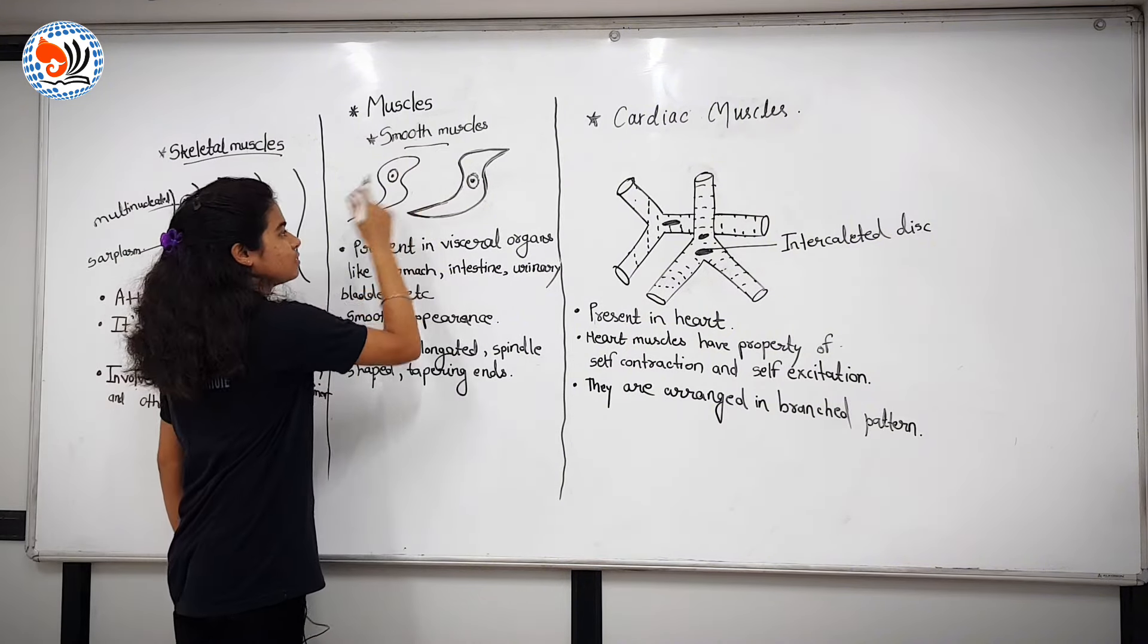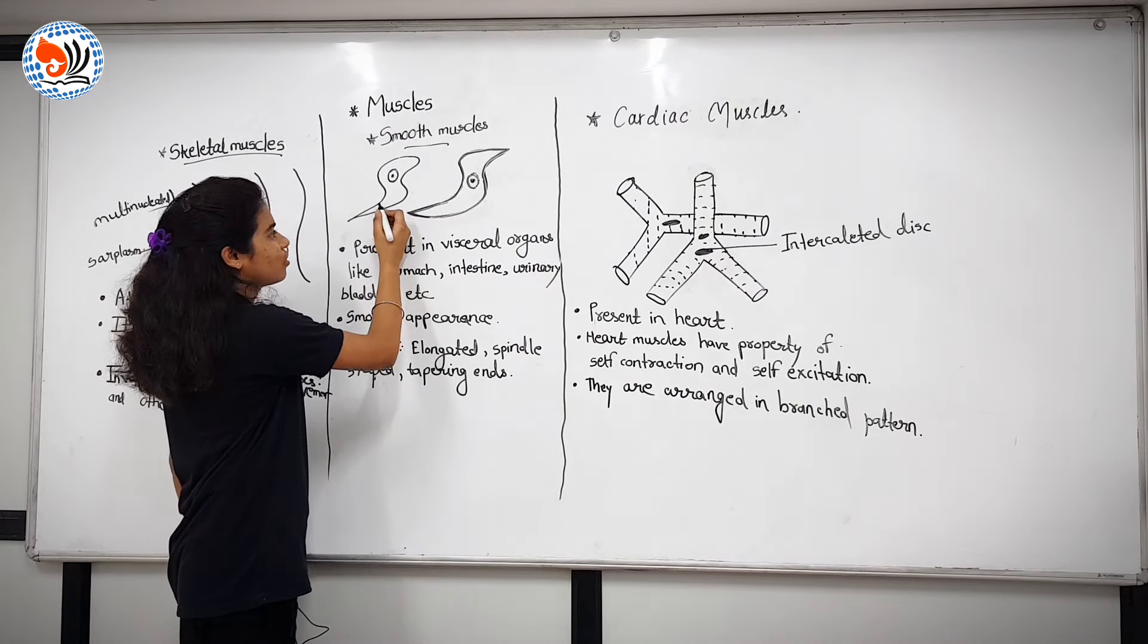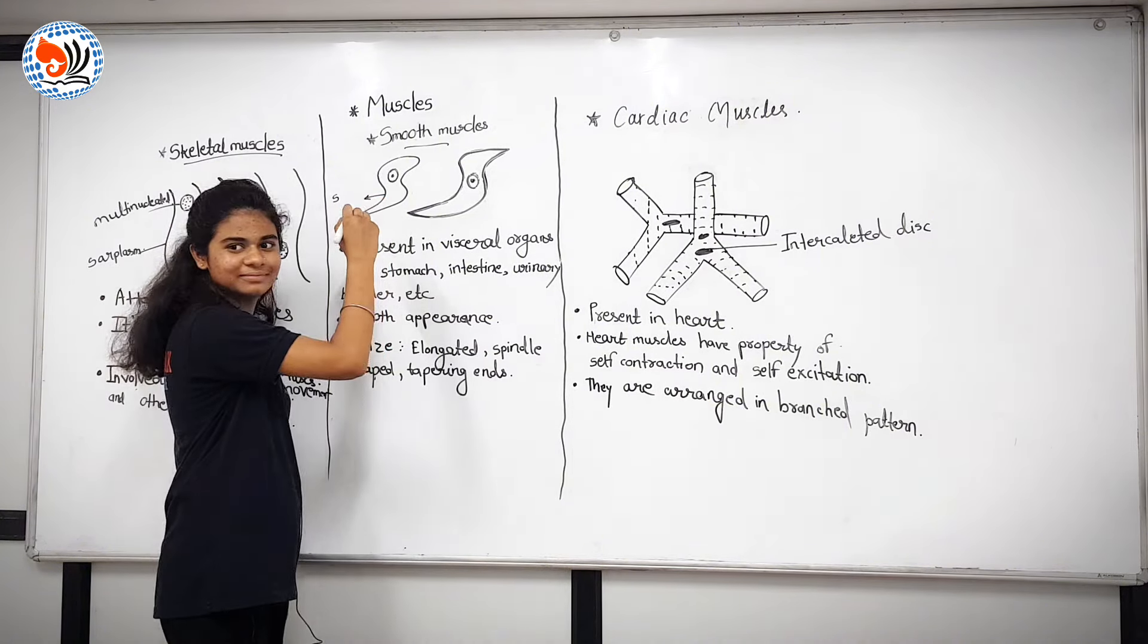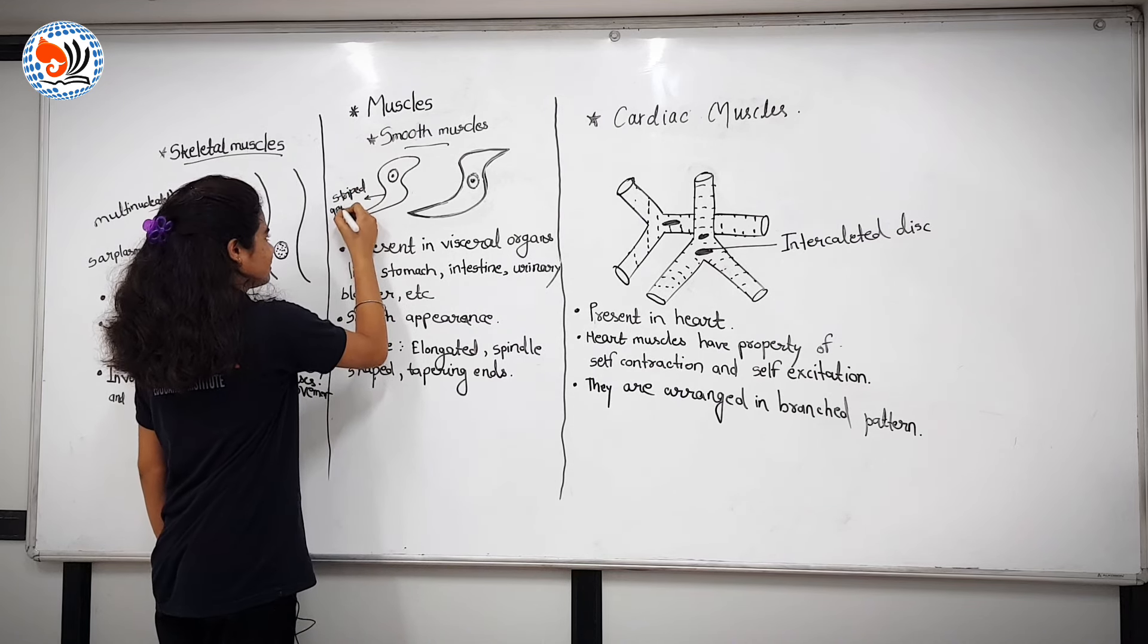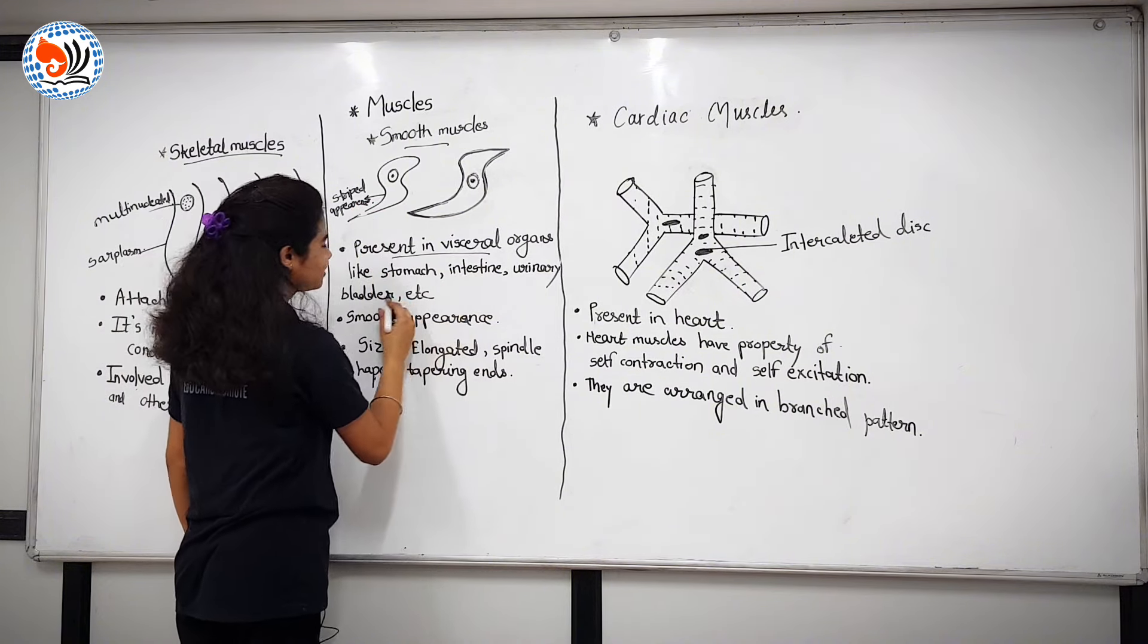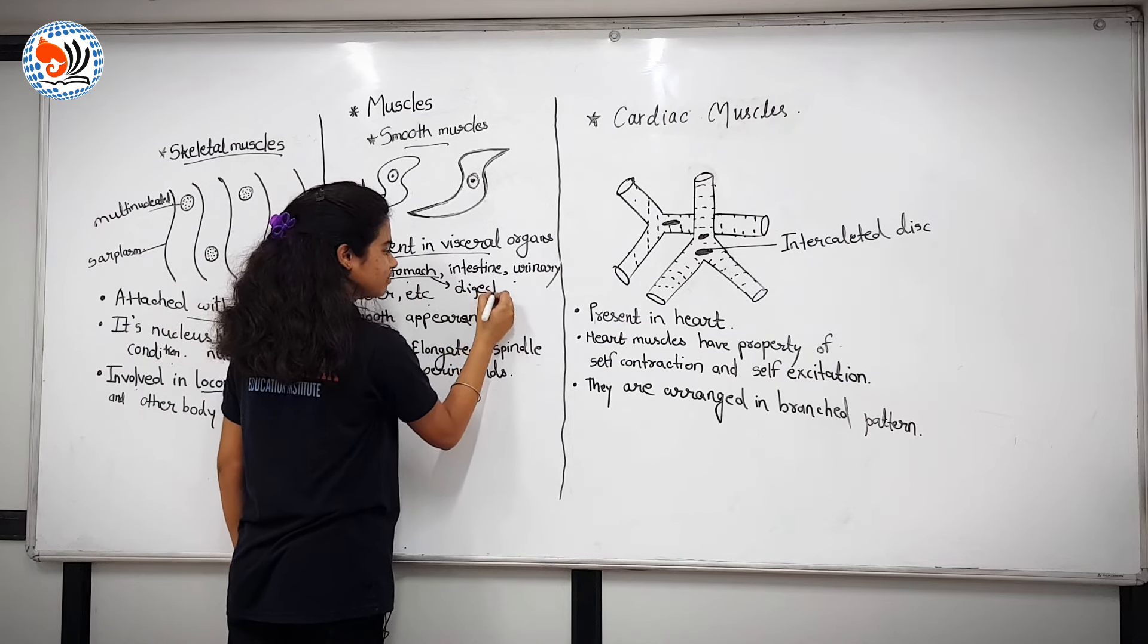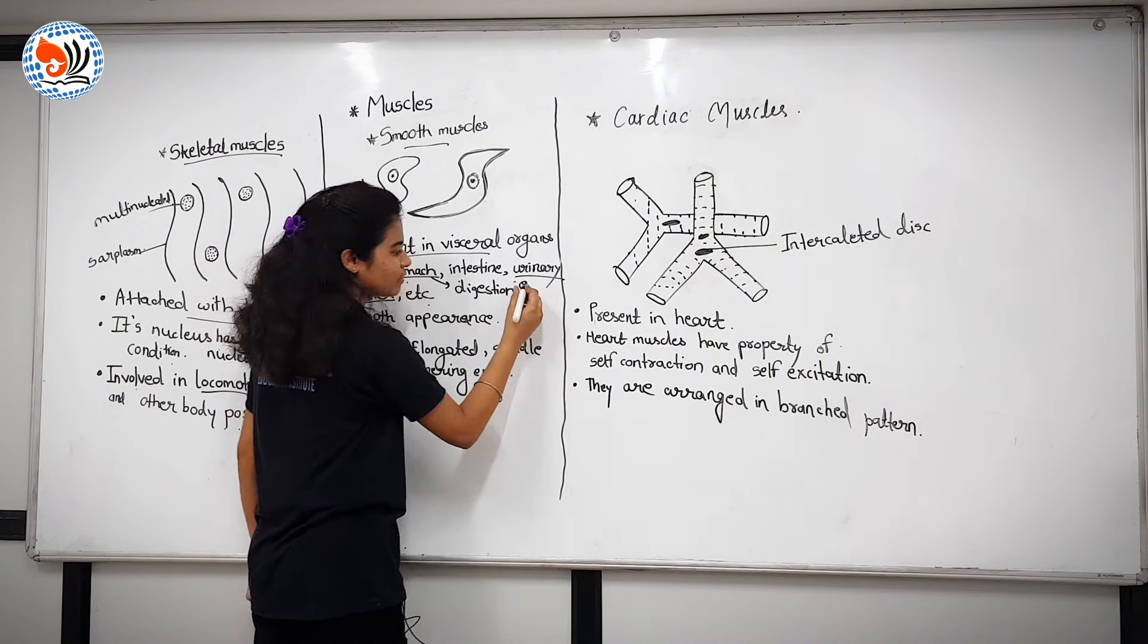Secondly, smooth muscles. Smooth muscles are involuntary muscles, their actions are not in our control and they have non-striped appearance. They are present in visceral organs like stomach, intestine, urinary bladder etc. In the stomach, they help in digestion. In the urinary bladder, they help in excretion.